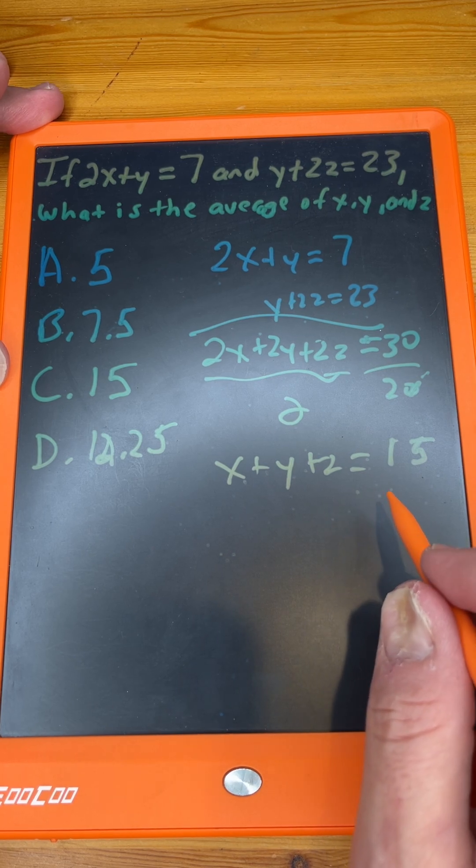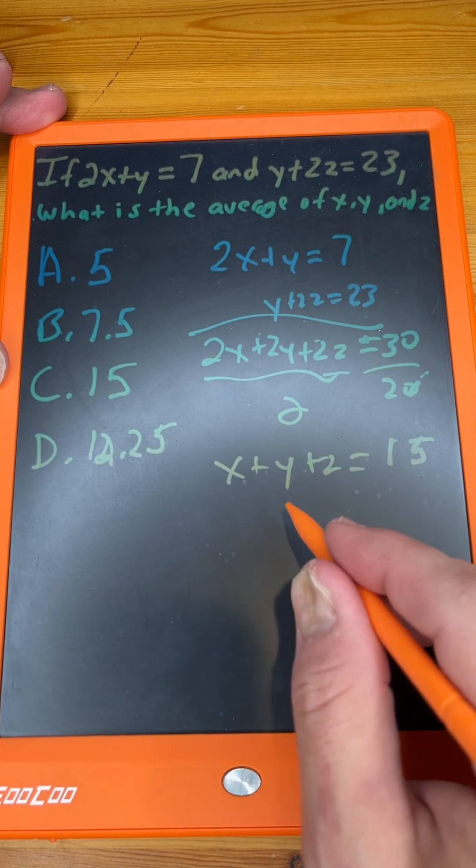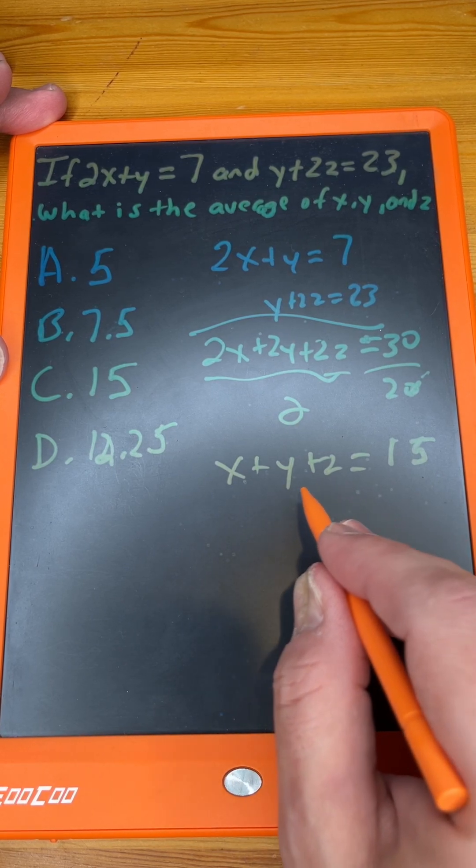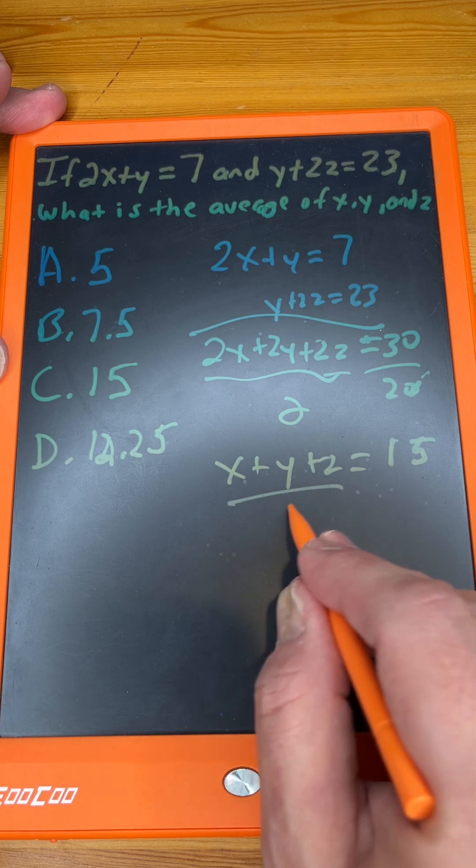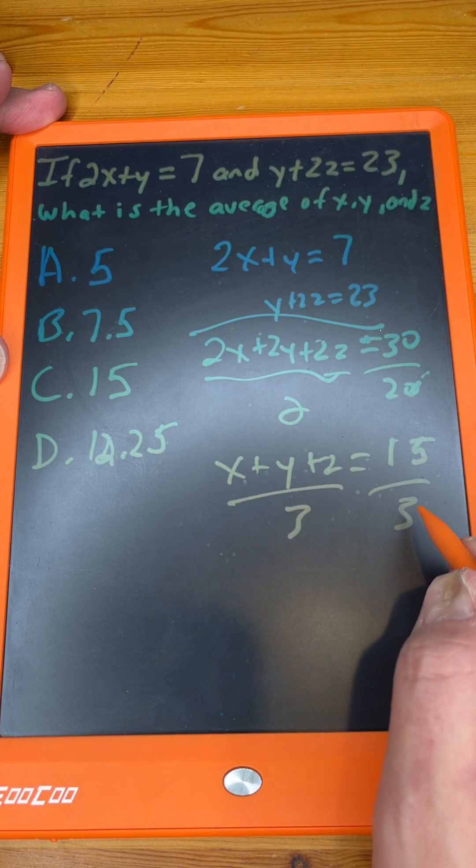Well, look at this. The average of the three variables is just the variables divided by 3. So if we take x plus y plus z equals 15, the average of x, y, z, we just divide by 3, and we get 5.